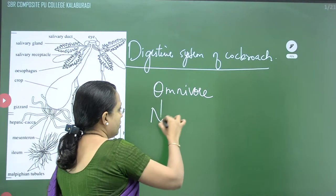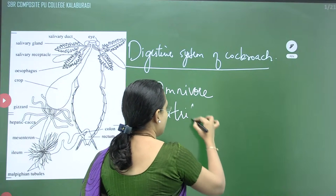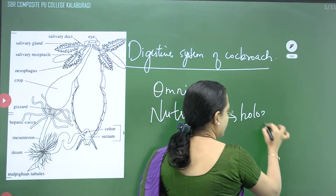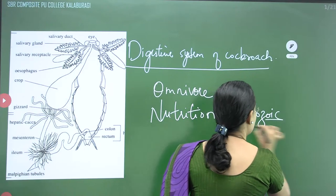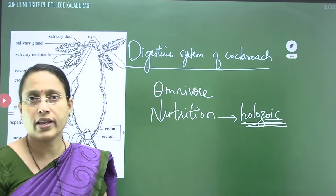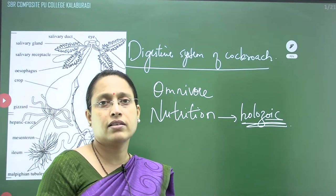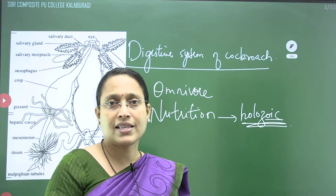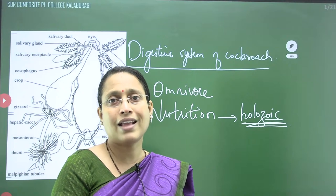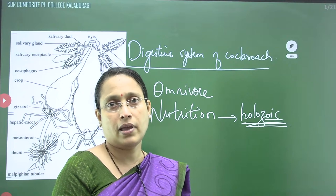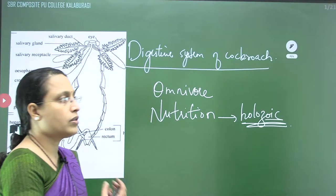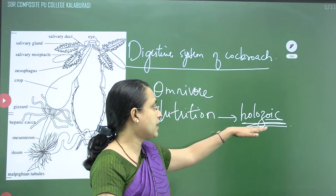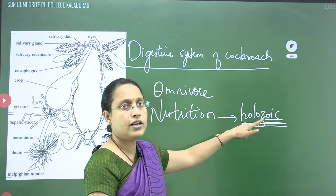The nutrition of the cockroach is typically holozoic. It has to ingest solid food matter, then masticate and grind it, and then enzymatically digest it. When ingestion of solid food particles occurs and they are subjected to digestion, that kind of nutrition is called holozoic nutrition. So this is omnivorous and the nutrition is holozoic.